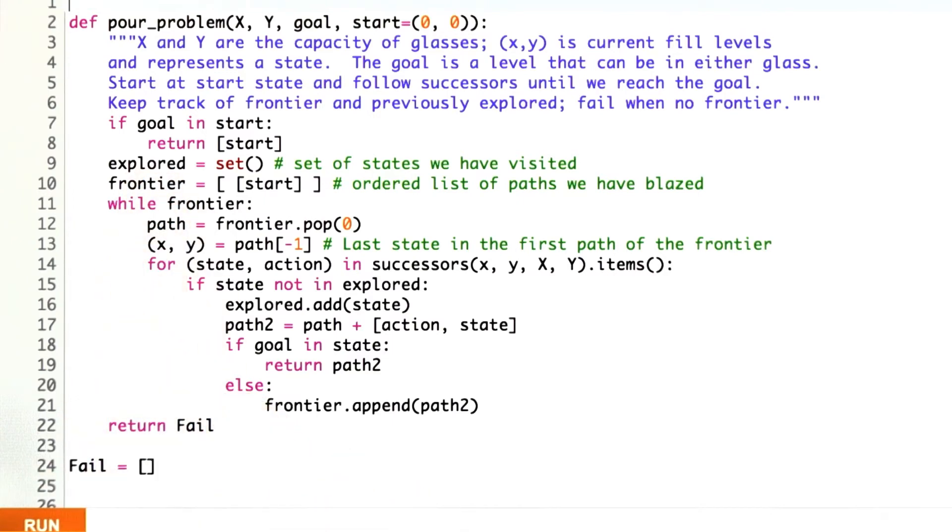We're going to keep track of the states that we've already explored, and that's going to be a set. We're going to keep track of the frontier. Conceptually, that's a set too, but we're going to pull the items off of the frontier one at a time. I've made it an ordered list rather than a set, so I know which element of the frontier do I want to explore first. The explored is a set of states, and the frontier is an ordered list of paths. The only path we have so far is the trivial path that says we're starting at the start and we haven't gone anywhere else yet. That's what we start our frontier with.